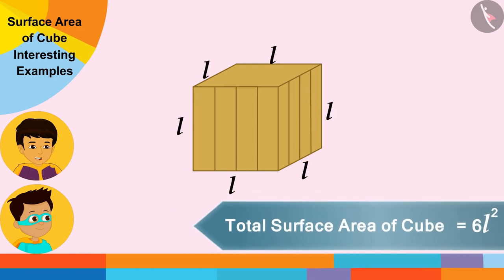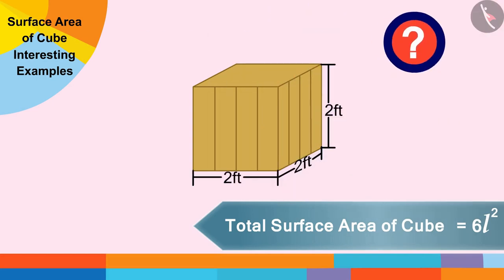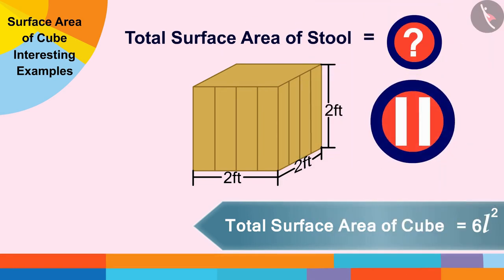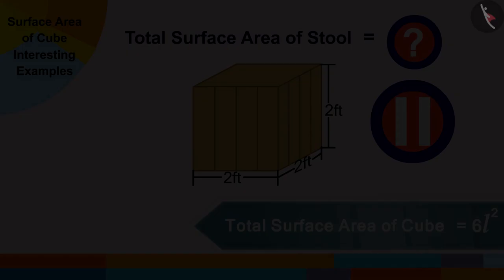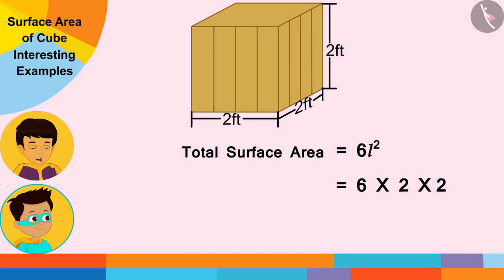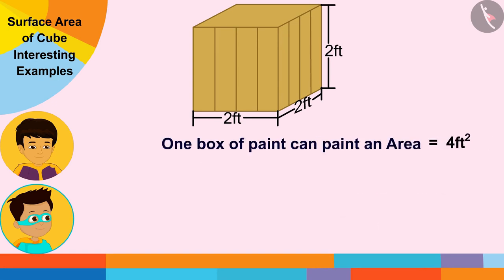Friends, if the length of each side of the stool is two feet, can you find the total surface area of this stool? Pause this video to try it yourself and then come back and match your answer. The length of each side of the stool is two feet — let me write it here instead of l. The total surface area of the stool is equal to 24 square feet.